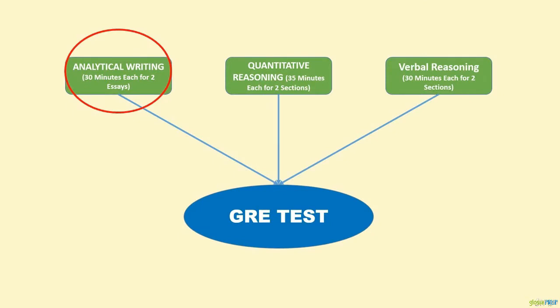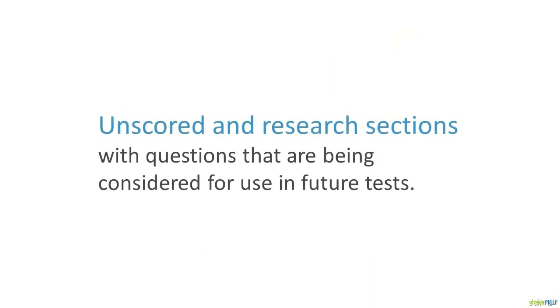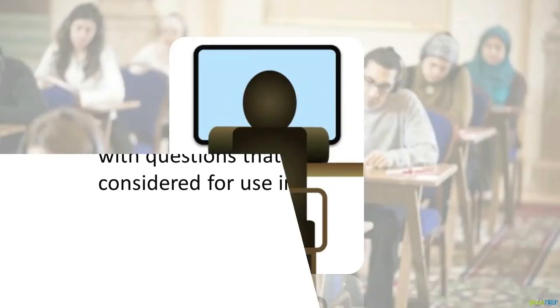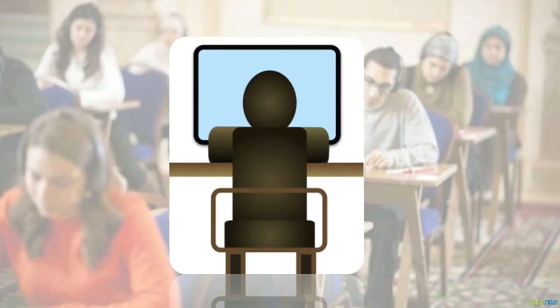The Analytical Writing section is always presented first. The other two sections may appear in any order and may include unscored and research sections with questions that are being considered for use in future tests. Your answers on these won't count towards your score, but since you won't know which questions are in unscored sections and which aren't, you should treat every portion of the test as if it counts.